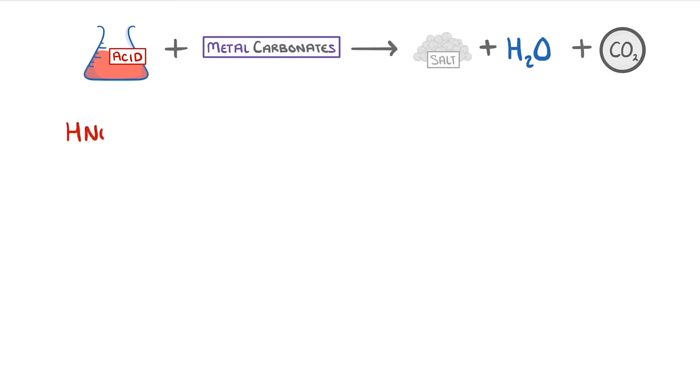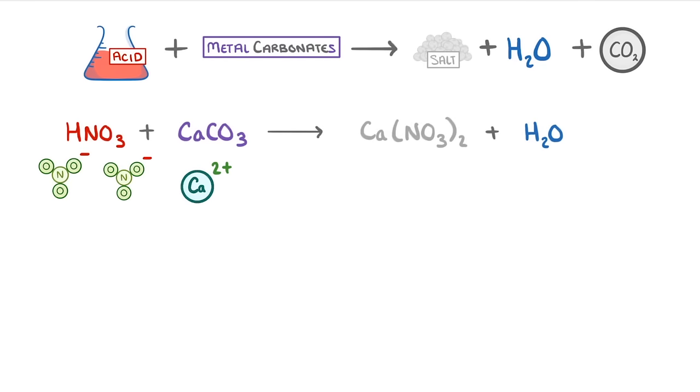So if we took nitric acid and combined it with calcium carbonate, then just like before, we'd take the positive calcium ion from our base and combine it with the negative nitrate ions from the acid. But because the nitrate only has a 1- charge, while the calcium's 2+, we'd need two of them to form calcium nitrate, which would be our salt. And then we'd also get water and carbon dioxide, and have to check it's balanced.